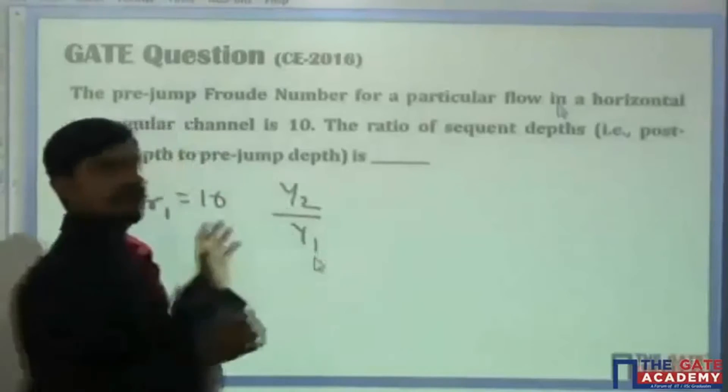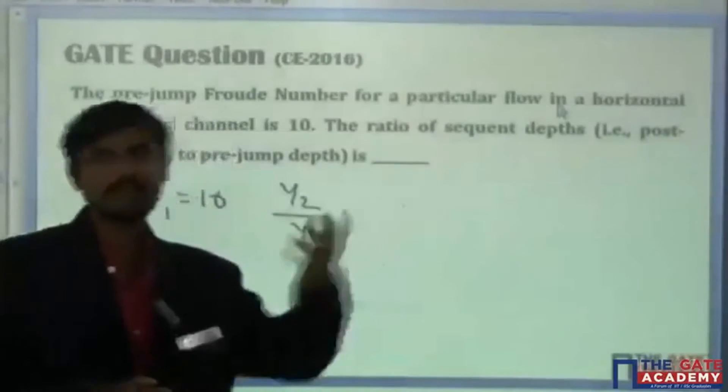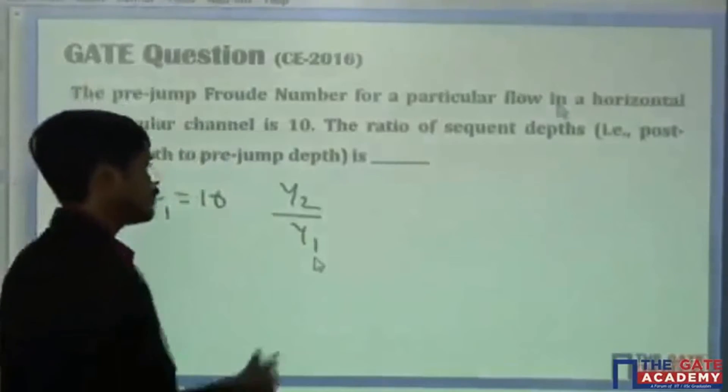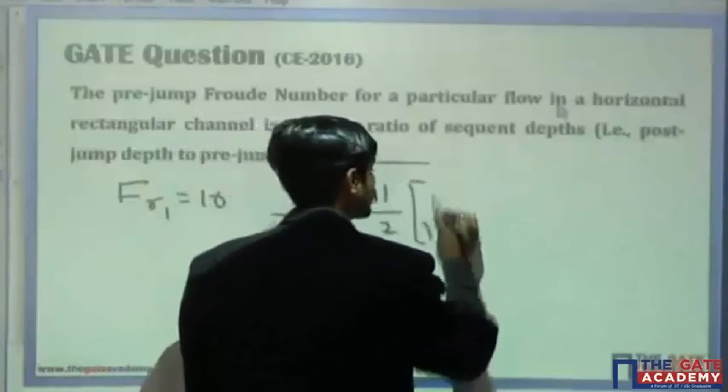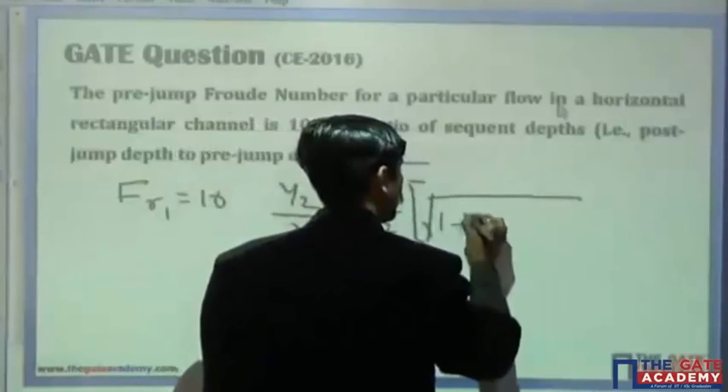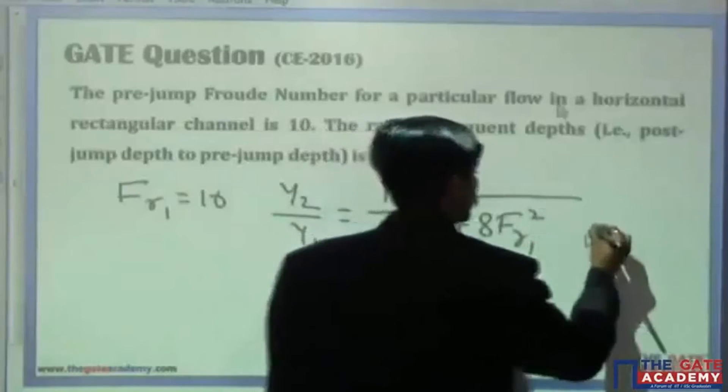You can also call it d2 by d1. In some textbooks it is y2 by y1, in some it's d2 by d1, your wish. The formula is equal to 1 by 2 into bracket, square root of 1 plus 8 Fr1 square minus 1.